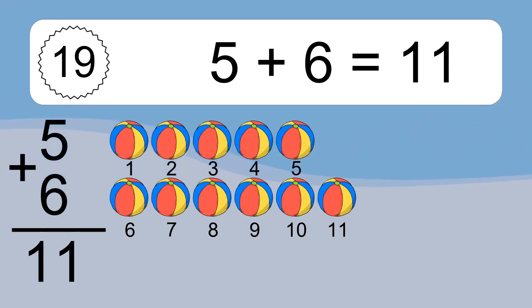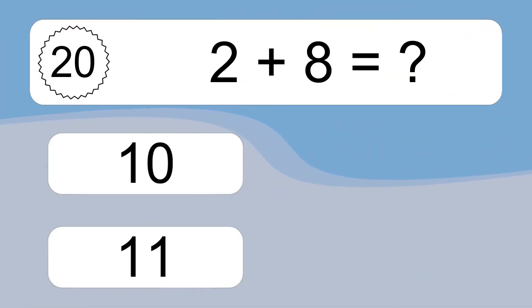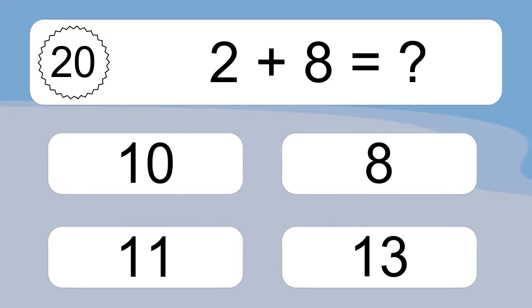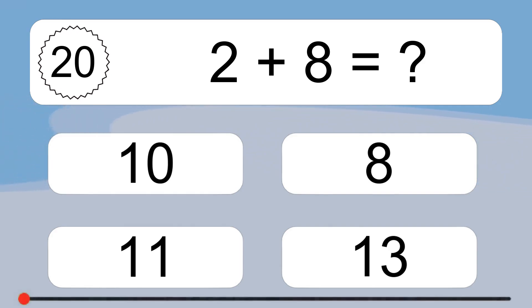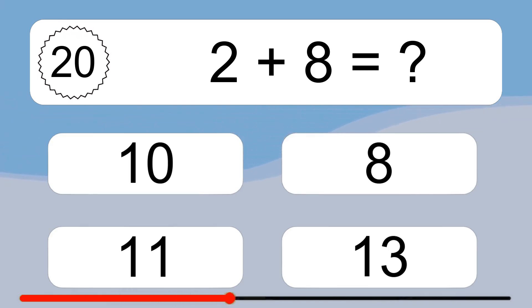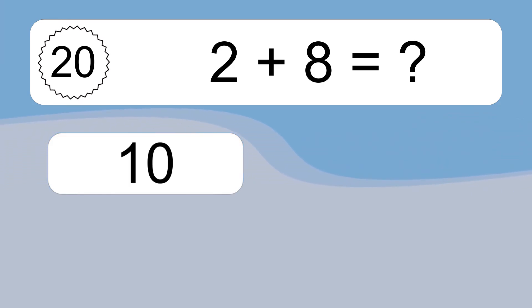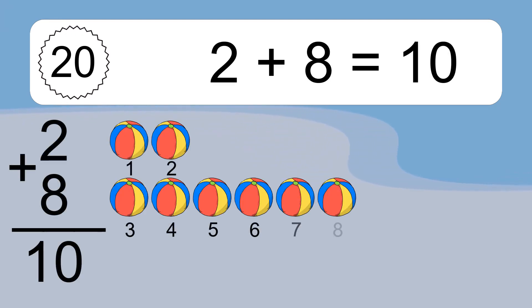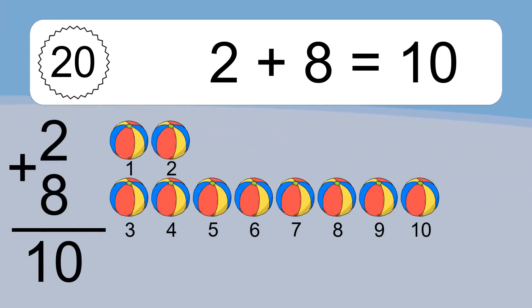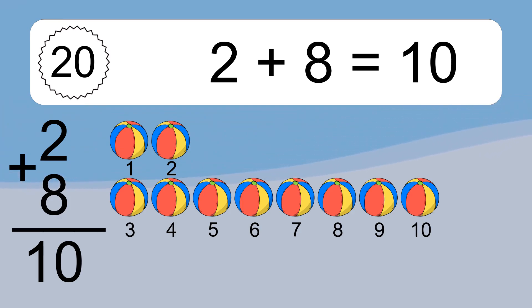2 plus 8 equals what? 2 plus 8 equals 10. Let's count it: 1, 2, 3, 4, 5, 6, 7, 8, 9, 10.